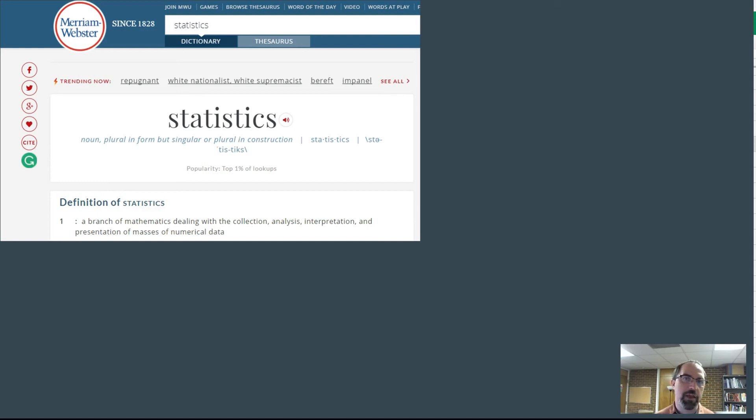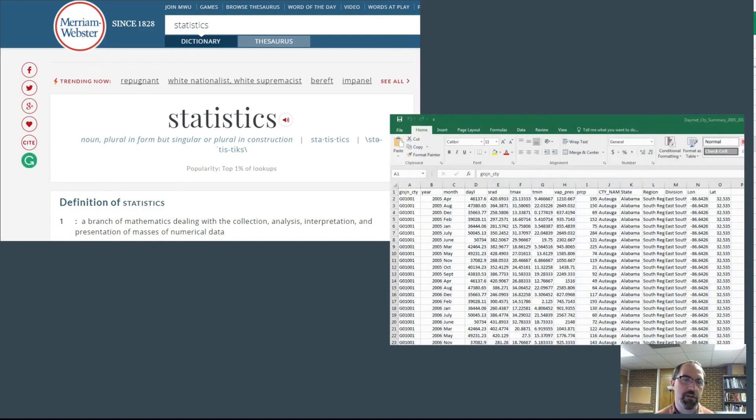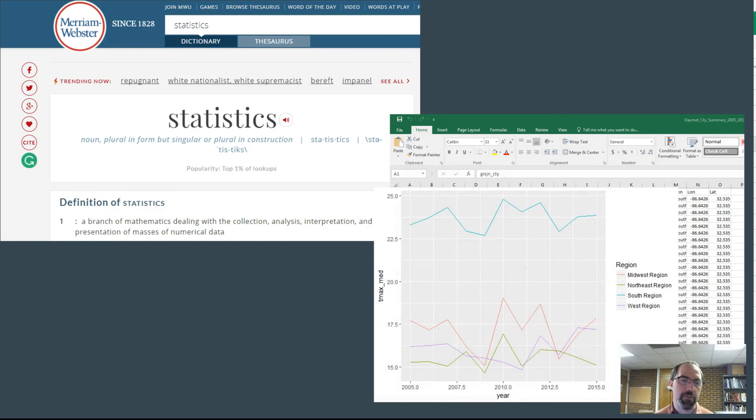Chances are when most of you think of statistical analysis, you think of data that looks somewhat like this. This is data on climate, similar to what you're going to be working on in the lab from the Daymet dataset. You're thinking about how do we analyze numbers on maximum temperature, the Tmax variable here.